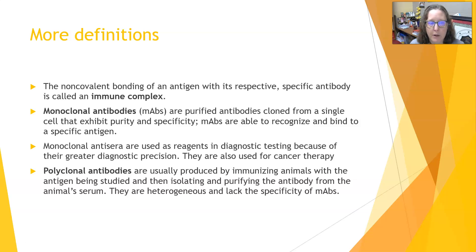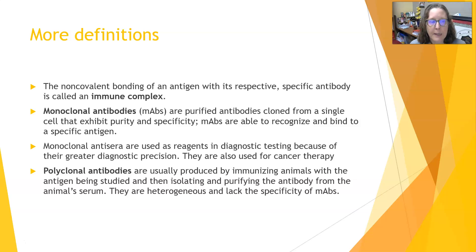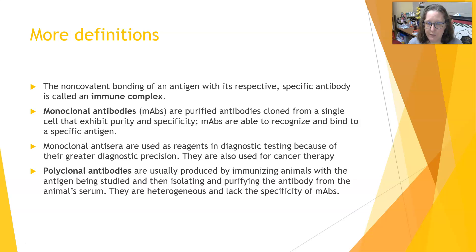A few more definitions: a non-covalent bonding of the antigen with its respective specific antibody is called an immune complex — for example, a flu virus with an anti-flu antibody linked together. Monoclonal antibodies are purified antibodies cloned from a single cell — a single lymphocyte or plasma cell — and they are pure and very specific, recognizing and binding a specific antigen. This makes them really useful for testing because it gives good diagnostic precision, and they can also be used for cancer therapy.